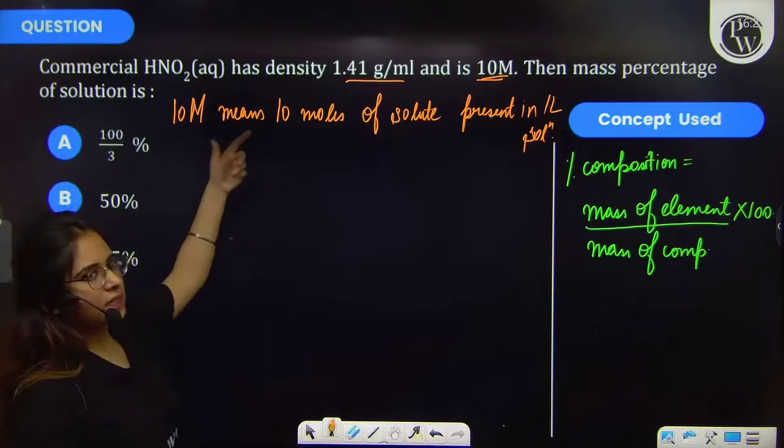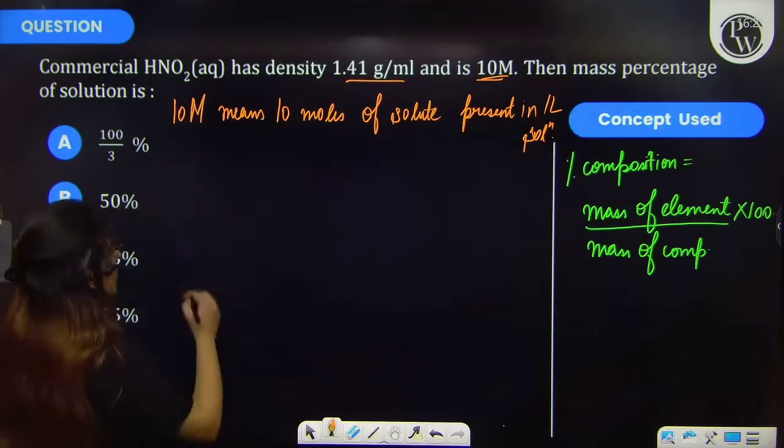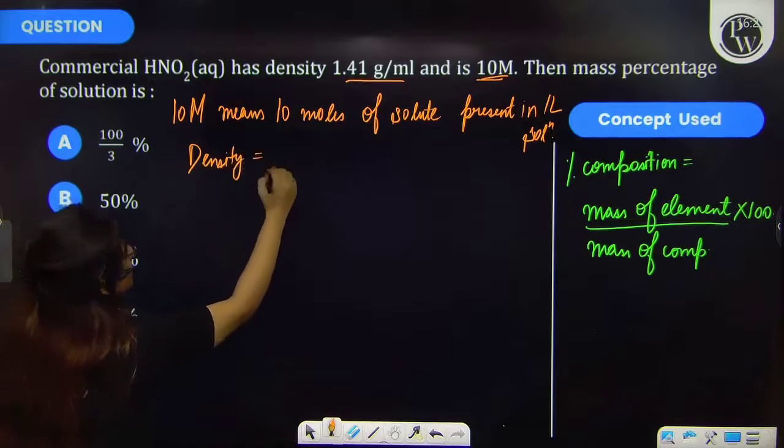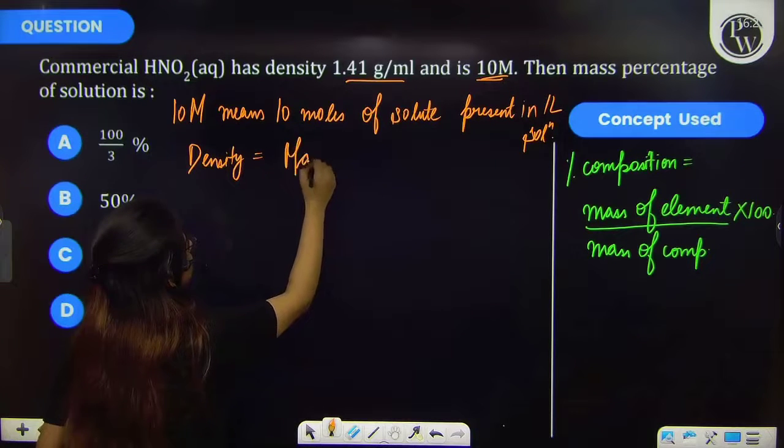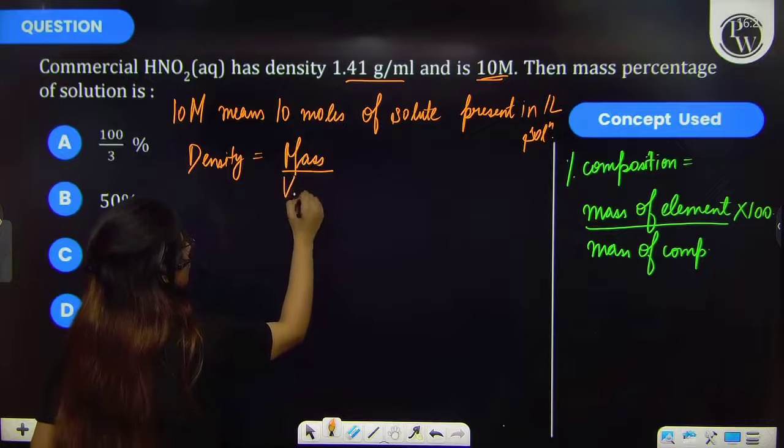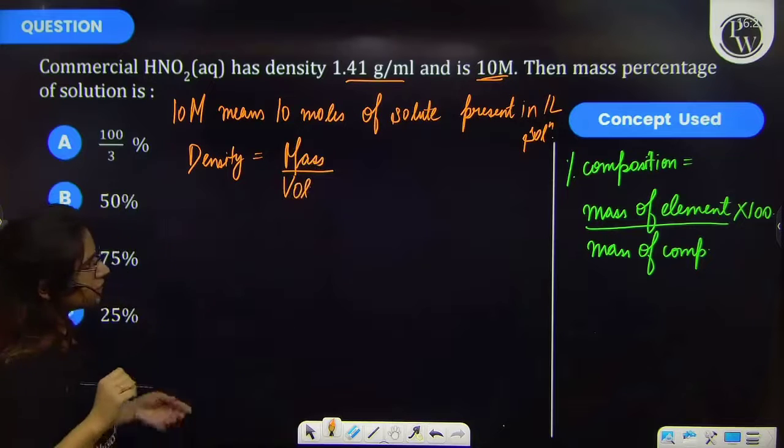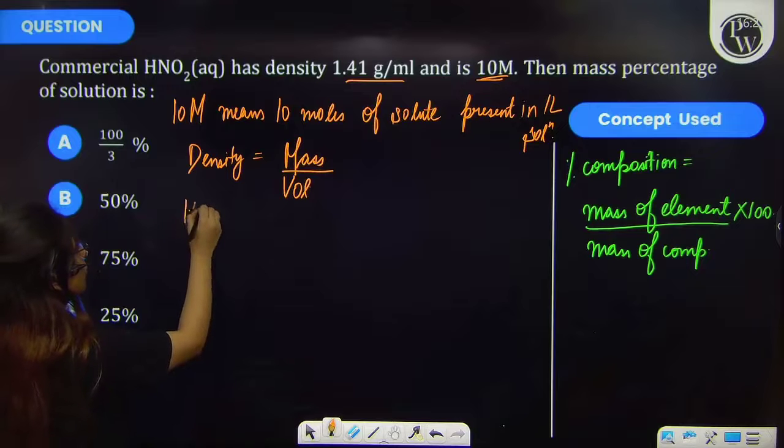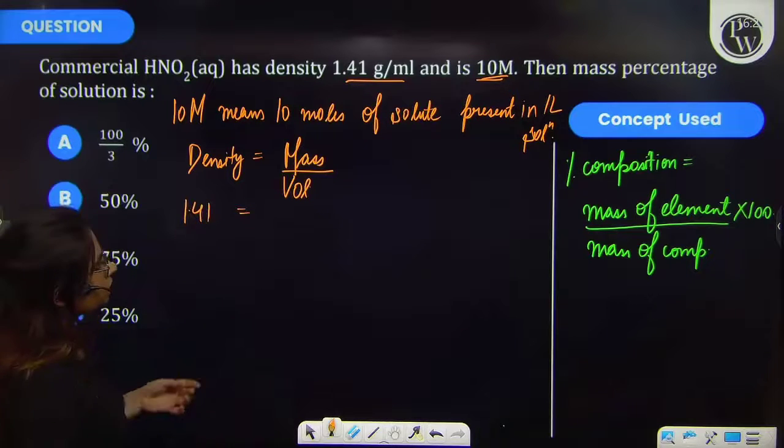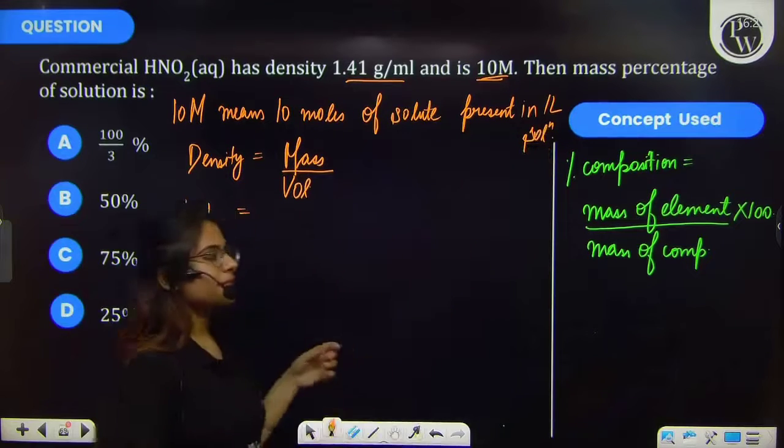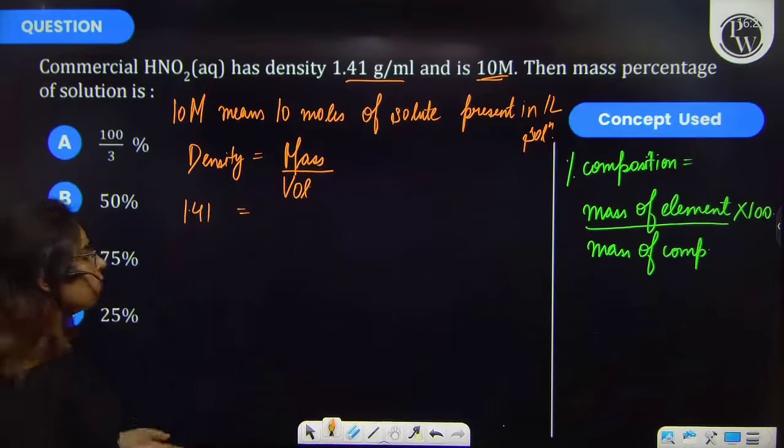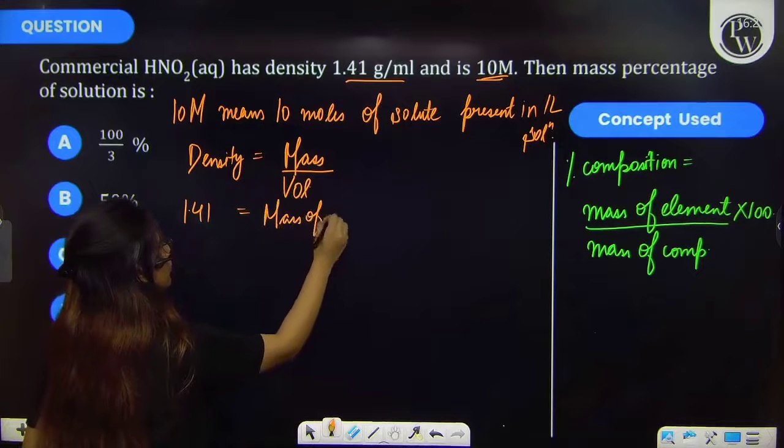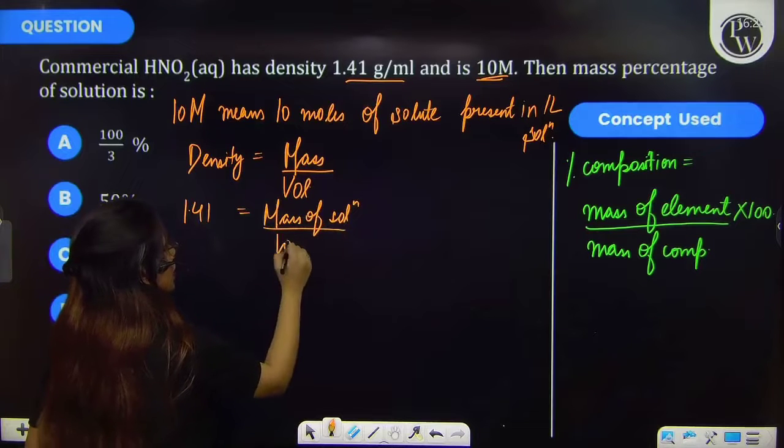Now let's find the mass of solution with the help of density. Density is equal to mass by volume, and density is equal to 1.41 gram per ml and volume is 1 litre, but since we are talking in ml so it will be 1000 ml.